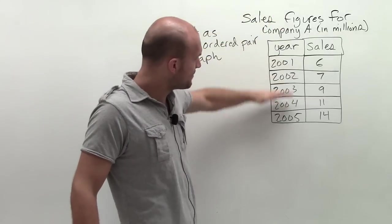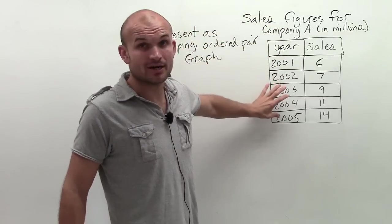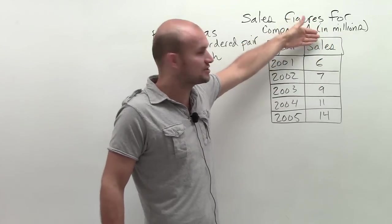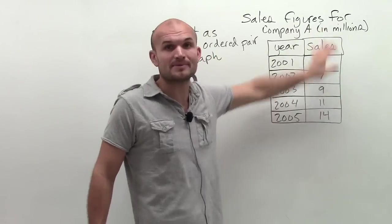So in a table, my input is going to be my year, and that's also going to be my domain. And the output or the range is going to be the sales, which is going to be represented out here.